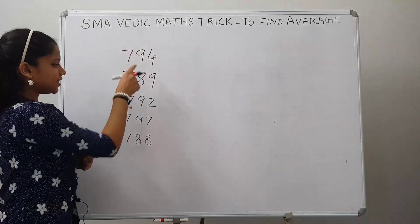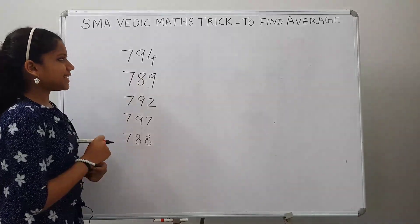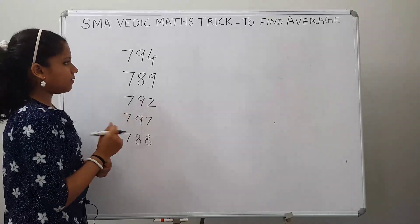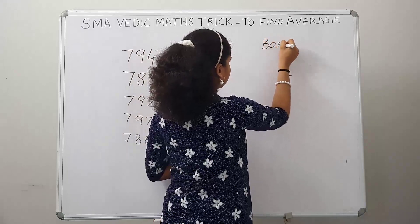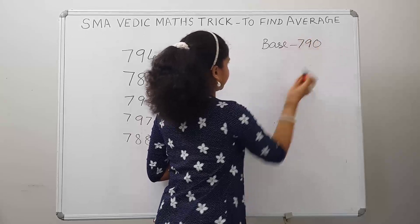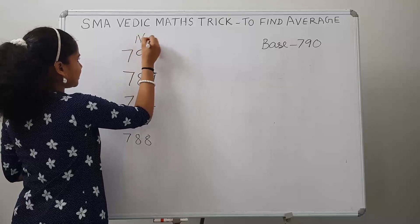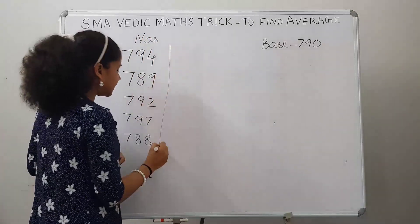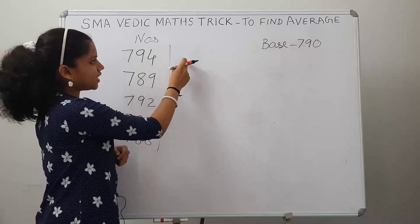These 5 numbers are close to each other, so let's take a base which is in between these 5 numbers. Let's take the base as 790. Now, let's write the difference between each number and the base next to each number.